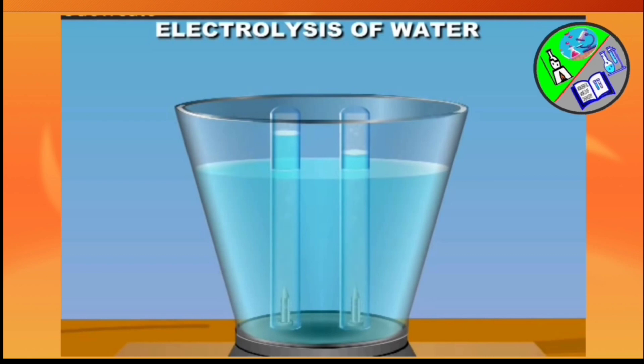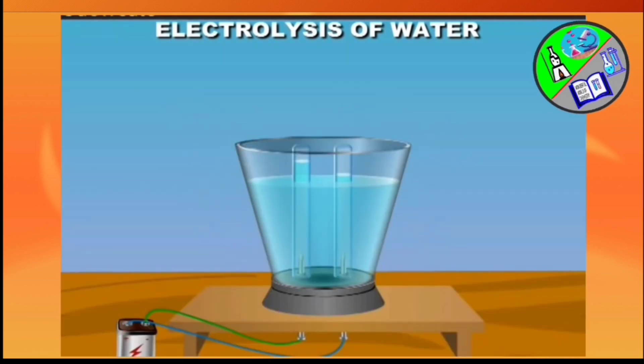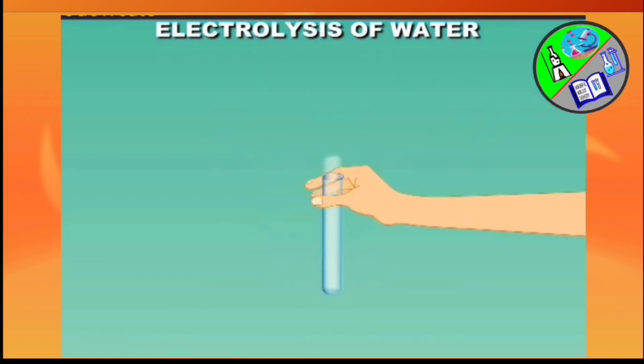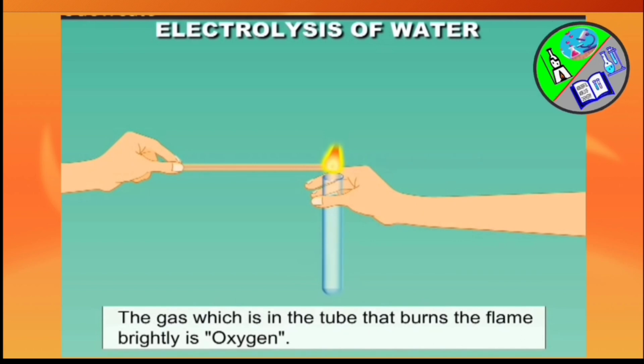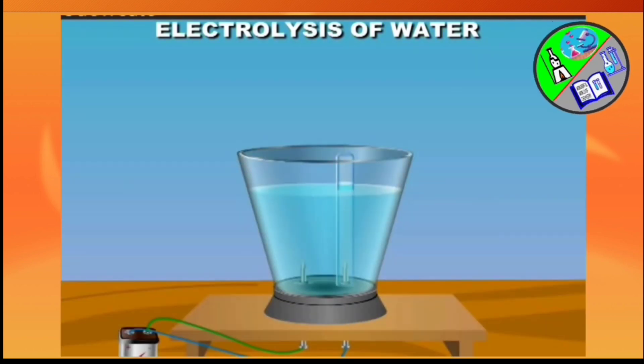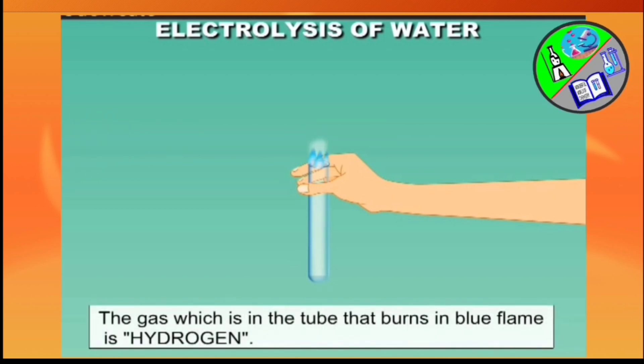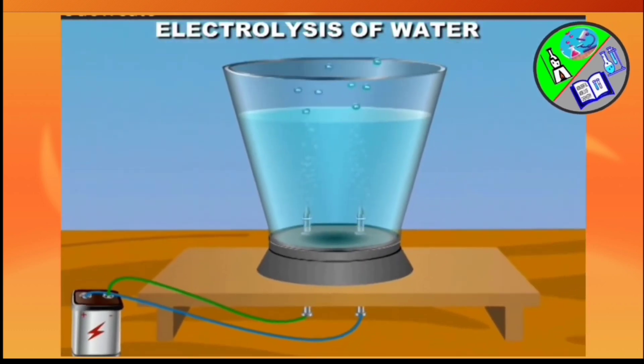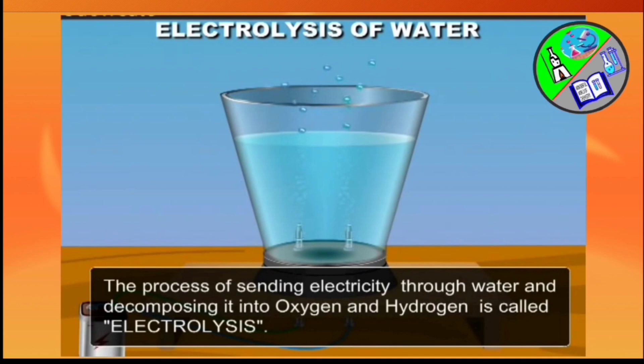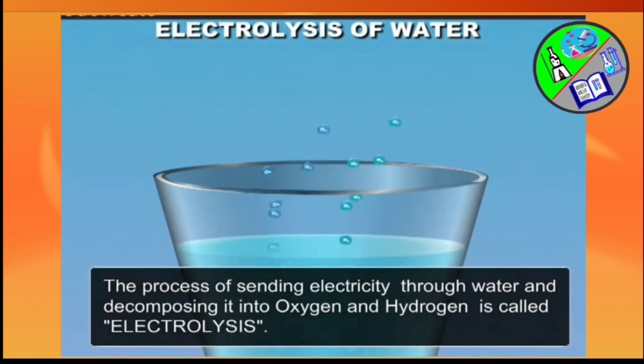Are the volume of gases same? Answer is no. Then introduce a glowing splinter in the test tube where the less amount of gas is formed. The splinter burns brilliantly. So we can say this gas is oxygen. Then in the another test tube also a glowing splinter is to be introduced where more volume of gas is produced. The splinter is put out with a pop sound. So we can say the gas present is hydrogen. This process of sending an electricity in water and decomposing them is called electrolysis.